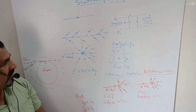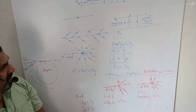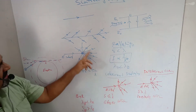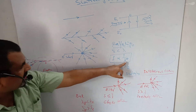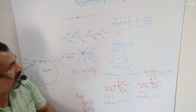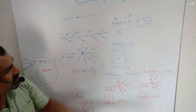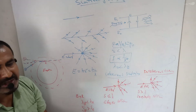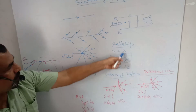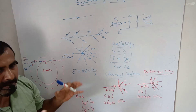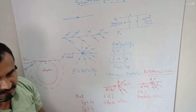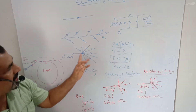According to Rayleigh, if the size of the particle is less than the wavelength of light, then the intensity of the scattered light is inversely proportional to the fourth power of the wavelength of light. This is called the law of Rayleigh scattering. According to Rayleigh, scattering of light depends upon three factors: one is the size of the particles, second is the wavelength of light, and third is the number of particles suspended in the medium — that is, particle density in the medium.